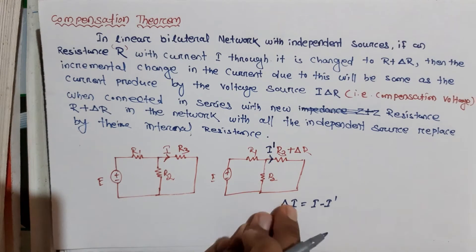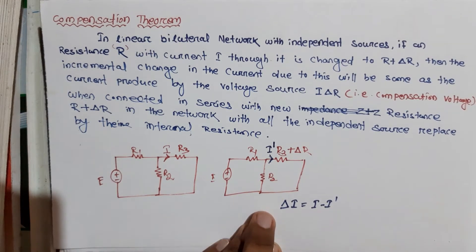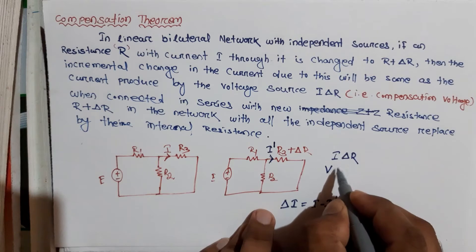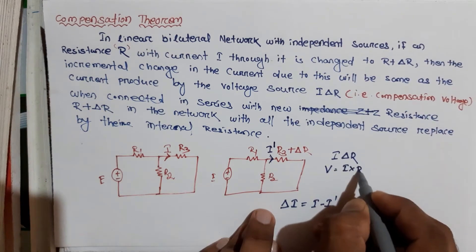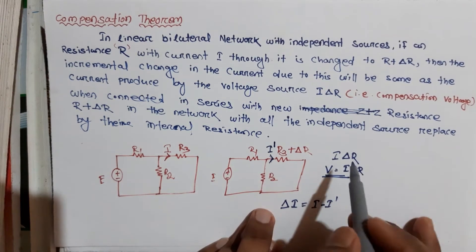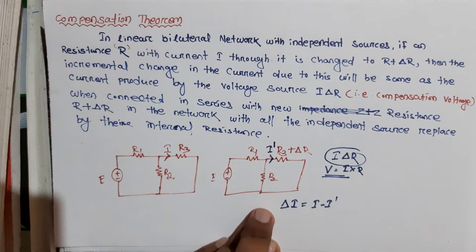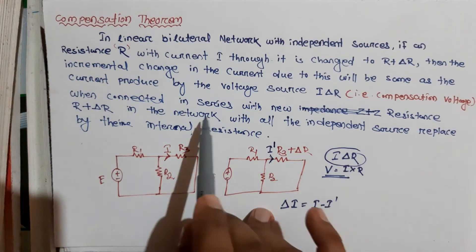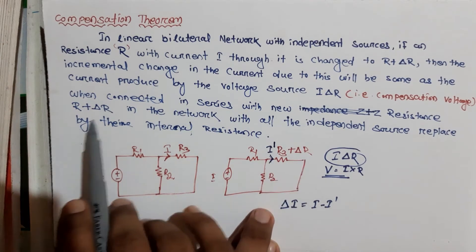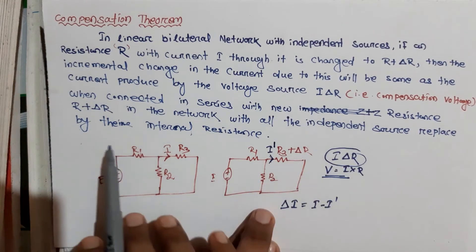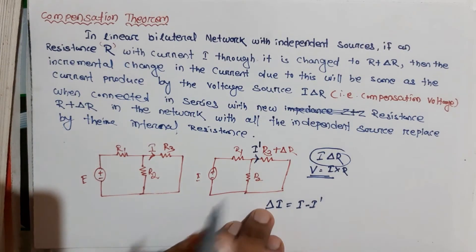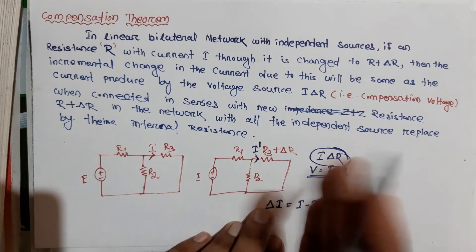Using the compensation theorem to find this delta-I, we redraw the circuit with a compensation voltage equal to I times delta-R — because by Ohm's law, current multiplied by resistance gives voltage. This compensation voltage is connected in series with the new resistance, and it always opposes the main source.